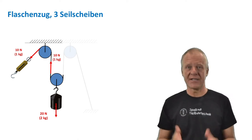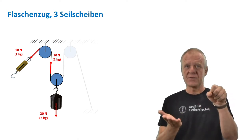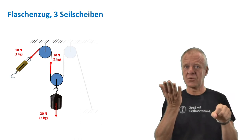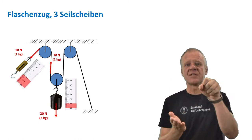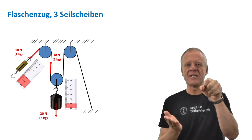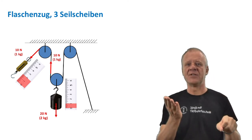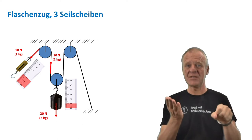However, physics demands that we have to pay for it. If we want to lift the weights with half the pulling force, then we have to accept that the fast line will only move twice the distance. So pulling the fast line out by two meters, the weight will only move up by one meter.